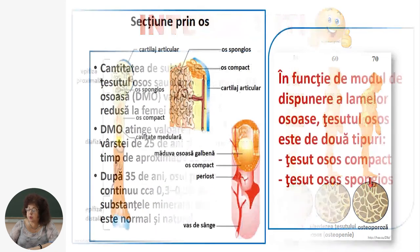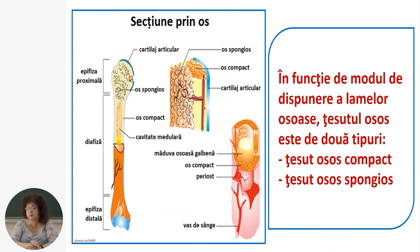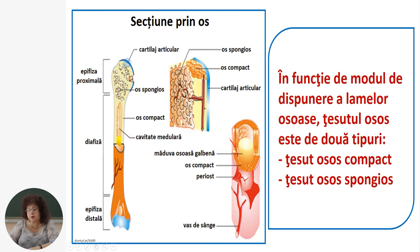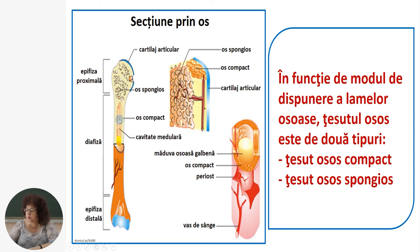În funcție de modul de dispunere a lamelelor osoase, țesutul osos este de două tipuri: țesut compact și spongios. În imagine vedem secțiune printr-un os tubular care are două capete — epifiza proximală și distală. Epifizele conțin țesut spongios, iar diafiza corpului osului conține țesut compact, situat la suprafața osului, pe când în interior se conține o cavitate umplută cu măduvă osoasă galbenă.